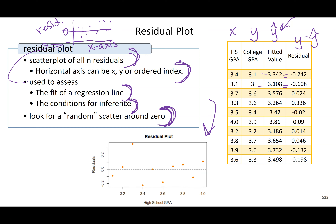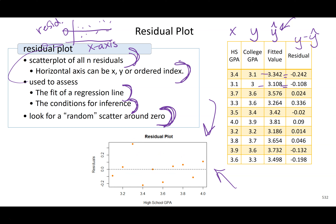For the college GPA example with 10 students, we have 10 residuals. Looking at the residual plot, it looks like fairly random scatter. There is one outlier — a student with a 3.3 high school GPA who did better in college than the line predicted — but overall, random scatter is good. Patterns are bad; random scatter we love.